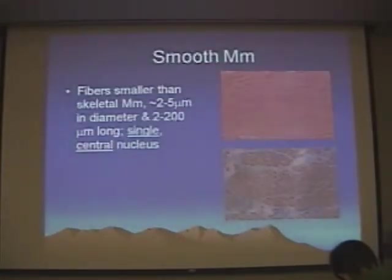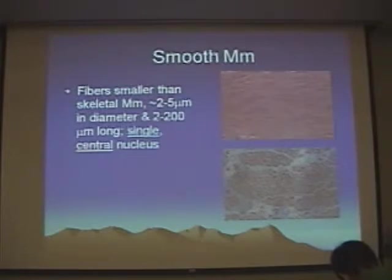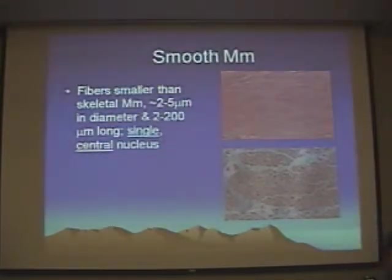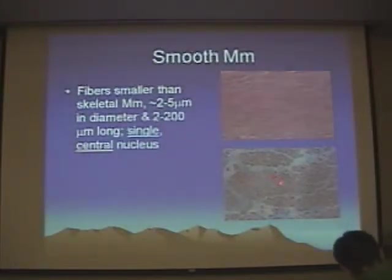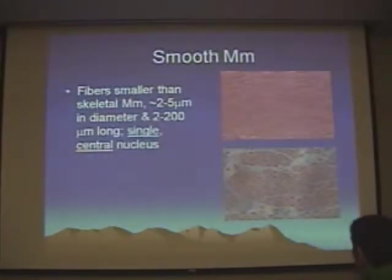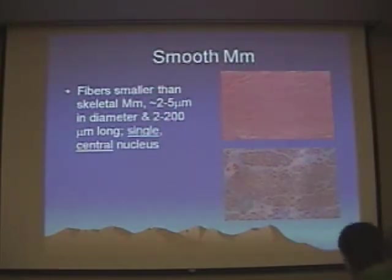Smooth muscle is called smooth because it doesn't have actin-myosin arranged in sarcomeres. Instead, there's a random arrangement of actin-myosin filaments. Because the fibers of the individual cells are smaller, they have a single central nucleus as opposed to multiple peripheral nuclei. You can see these large central nuclei in both longitudinal and cross-section. There's also a similar arrangement of endomysium, perimysium, and epimysium within smooth muscle.